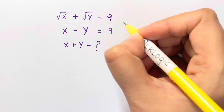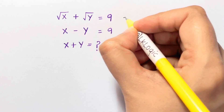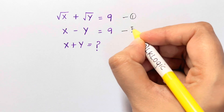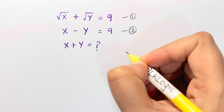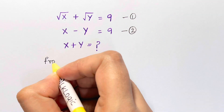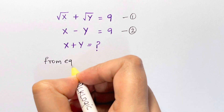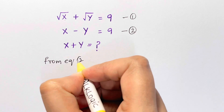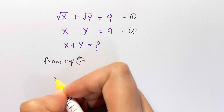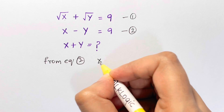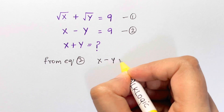Let's name them as equation 1 and equation 2. From equation 2, we can say x minus y equals 9.